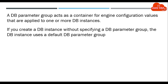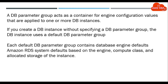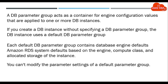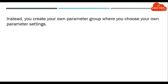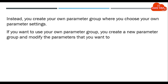You don't have any option for choosing the parameter group while using the easy create option. Each default DB parameter group contains database engine defaults and Amazon RDS system defaults based on the engine, compute class, and allocated storage of the instance. You can't modify the parameter settings of your default parameter group. If you want, you can create your own parameter group where you choose your own parameter settings. You need to create a new parameter group and modify the parameters that you want.